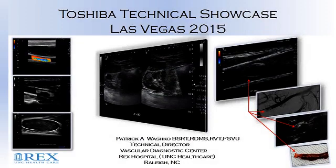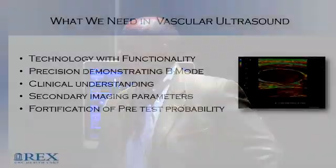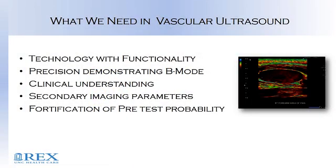I'd like to thank you all for coming. A couple of things I always talk about is technology with functionality — that's huge. Precision demonstrating B-mode is very important. Clinical understanding, not only of your patient's pathology, but of your machinery. What better patient care than understanding your machinery and its imaging parameters? Secondary imaging parameters, in many cases as you're going to see today, made a big difference in treatment. And fortification of pretest probability with our patients — that's our number one concern.